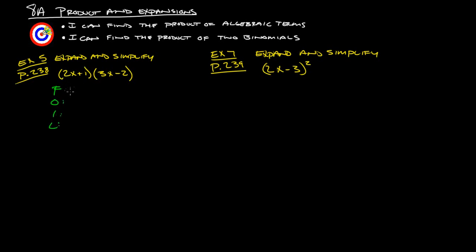Let's try FOIL first. 2x times 3x is 6x squared. That's the firsts. O for outside, 2x times negative 2 is negative 4x. I for inside, 1 times 3x is 3x. And then L for last, 1 times negative 2 is negative 2. Usually the outside and inside terms will combine together. And in this case, they do to get negative 1x or just negative x. So we end up getting 6x squared minus x minus 2.